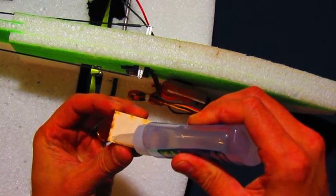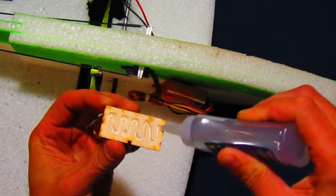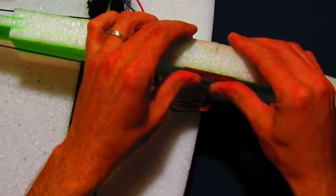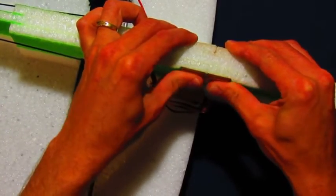Again, we're going to add a generous amount of our Foantac glue on the plywood plate, press it to the side of the fuselage, and just move it around a little bit to spread the glue out.